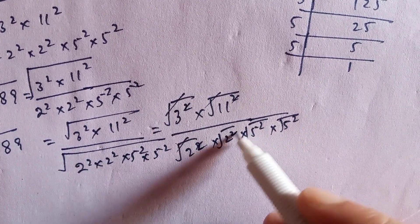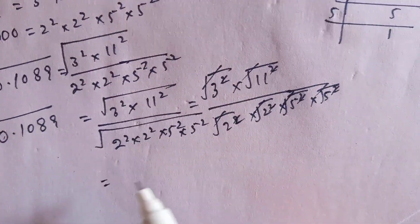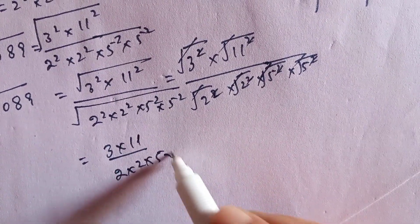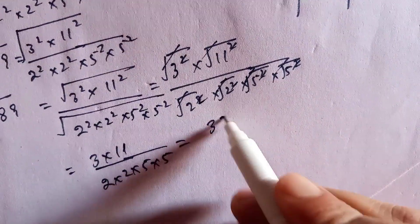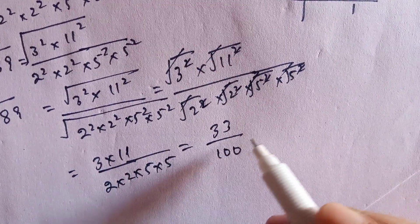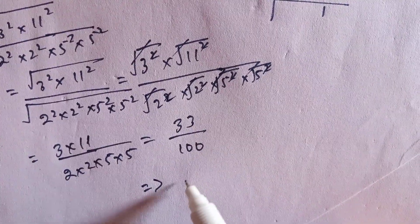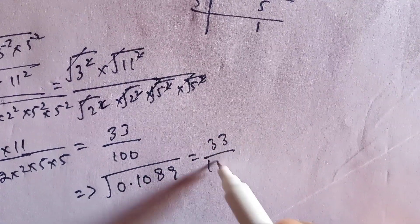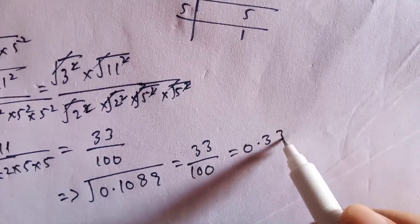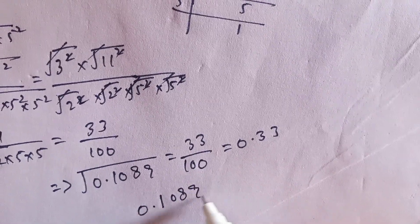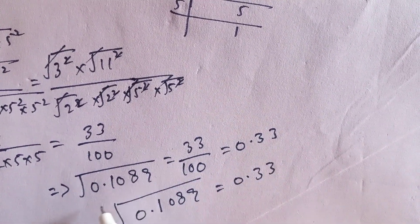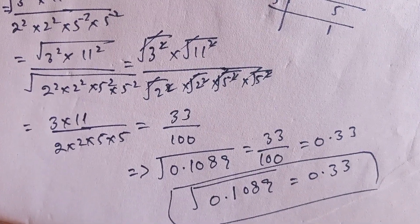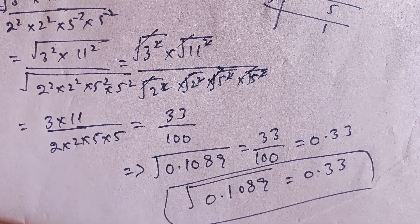Canceling the squares with the square roots, we get 3 times 11 over 2 times 2 times 5 times 5, which equals 33 divided by 100, equal to 0.33. So the square root of 0.1089 is equal to 0.33 — that is the final answer. Thank you for watching; if you liked the video, please subscribe to our YouTube channel for more interesting videos.